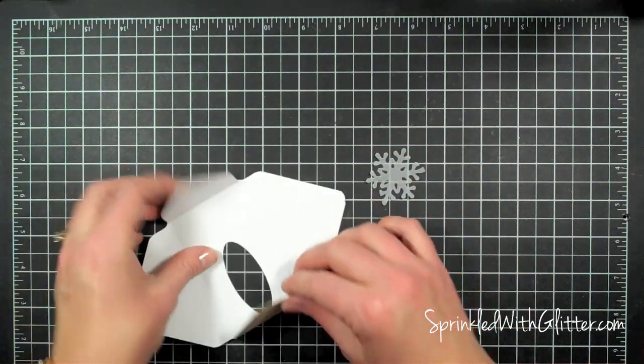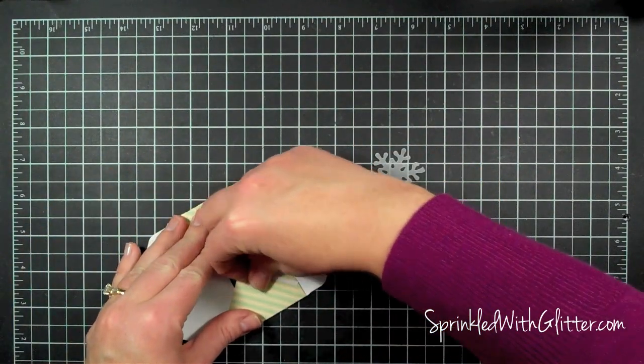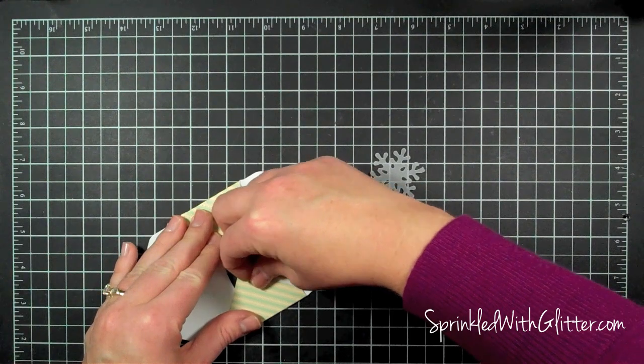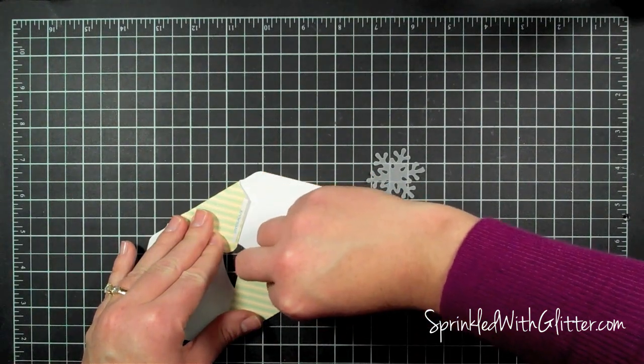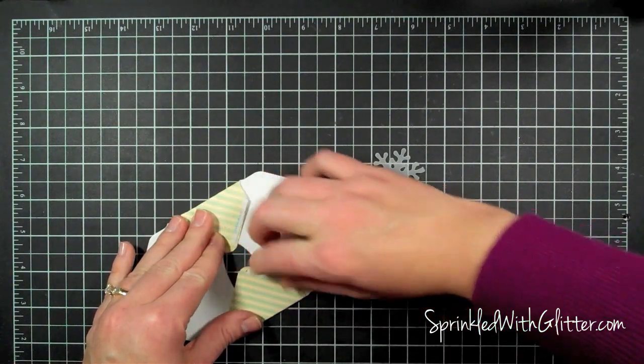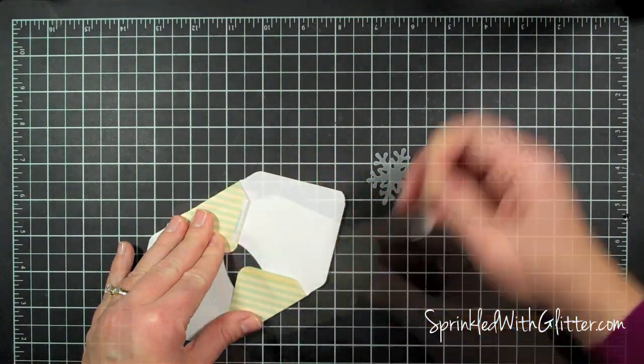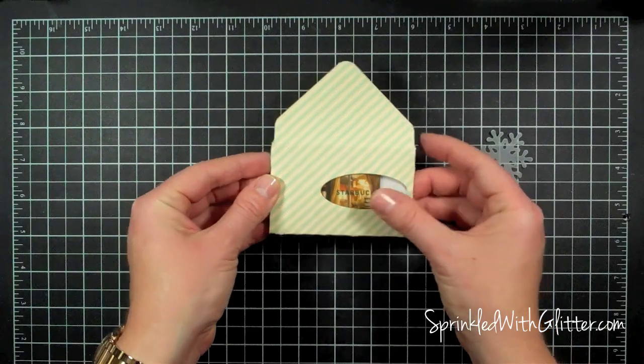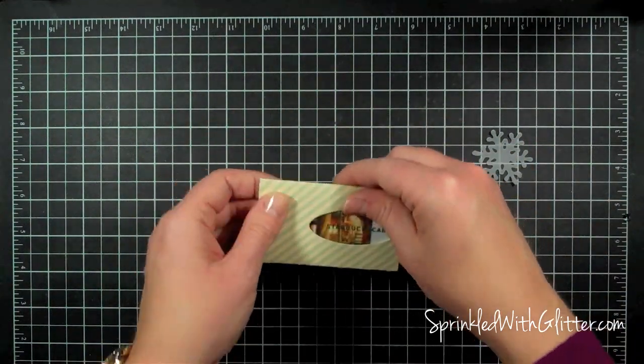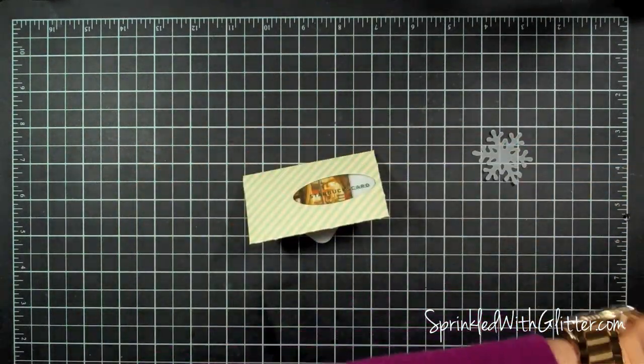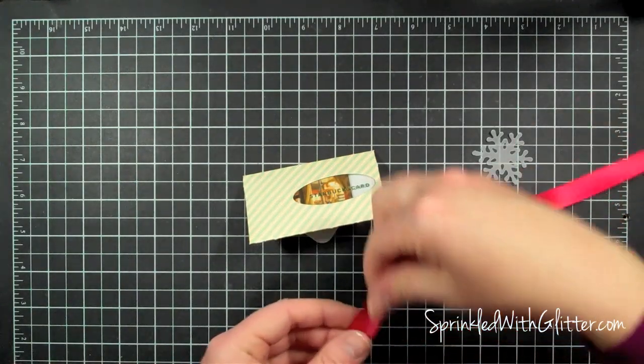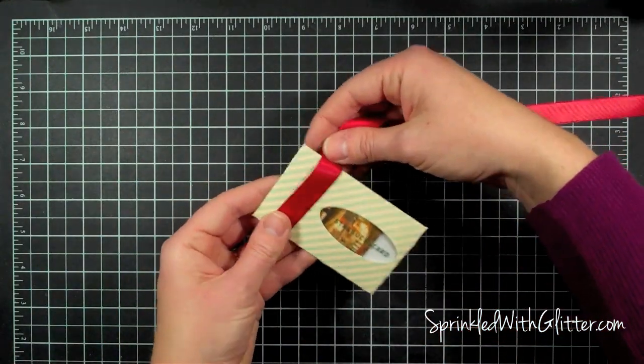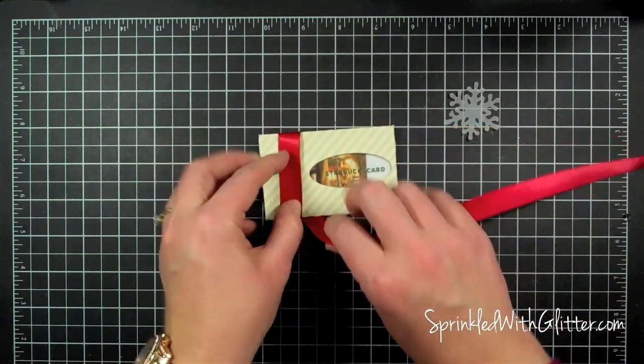So I have that there. I'm going to go ahead and close up this envelope. I'll just remove the backing from the Be Creative tape. And I'll show you how cool that little window is there. And then I'm just going to use a little bit of ribbon to tie this closed.